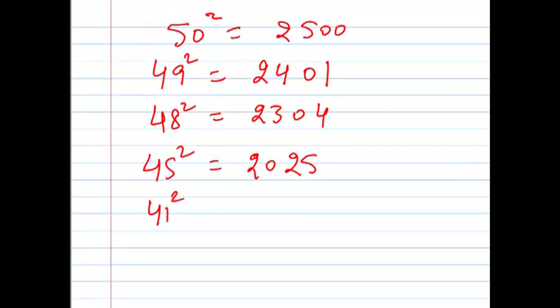For the 41 square, it will be 25 minus 9, that will be 16, and 9 square is 81, so 1681.